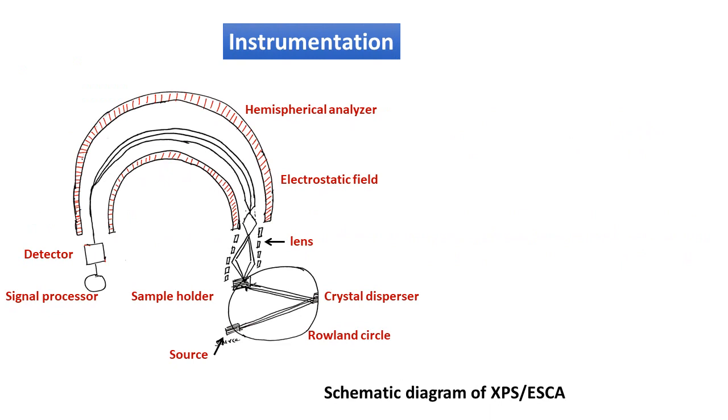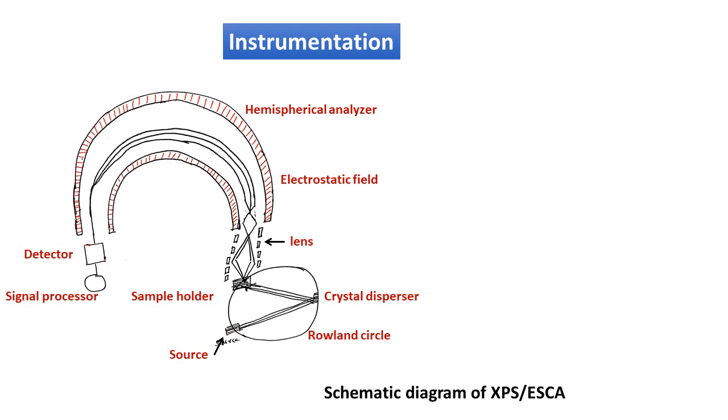Next part of XPS is instrumentation. Here you can see the instrument and their components. Source, source is X-ray tube. Then sample holder, crystal disperser which selects the X-ray photons of known energy and then it is incident on the sample surface. Then electron goes through the hemispherical analyzer to detector. And finally, spectrum is obtained in a signal processor. We will discuss one by one the parts of the instrument.